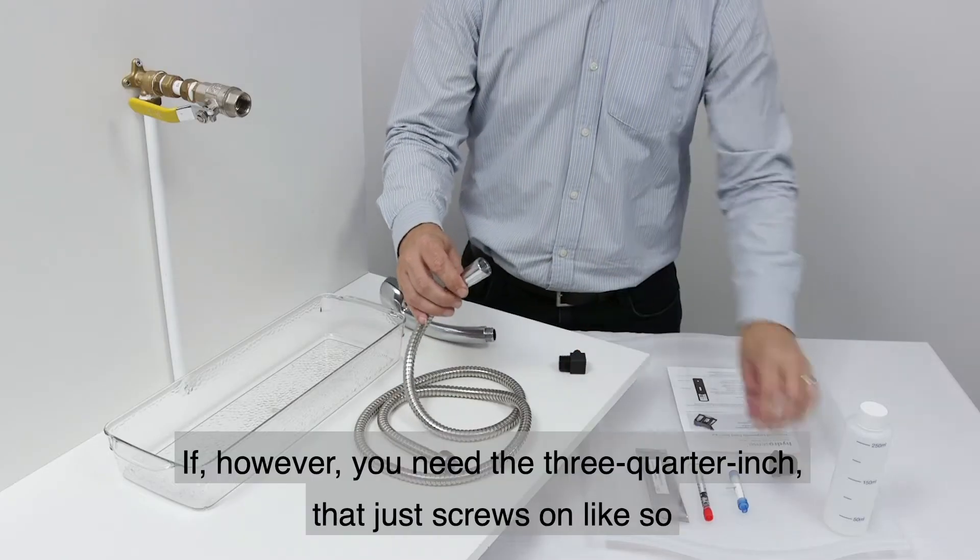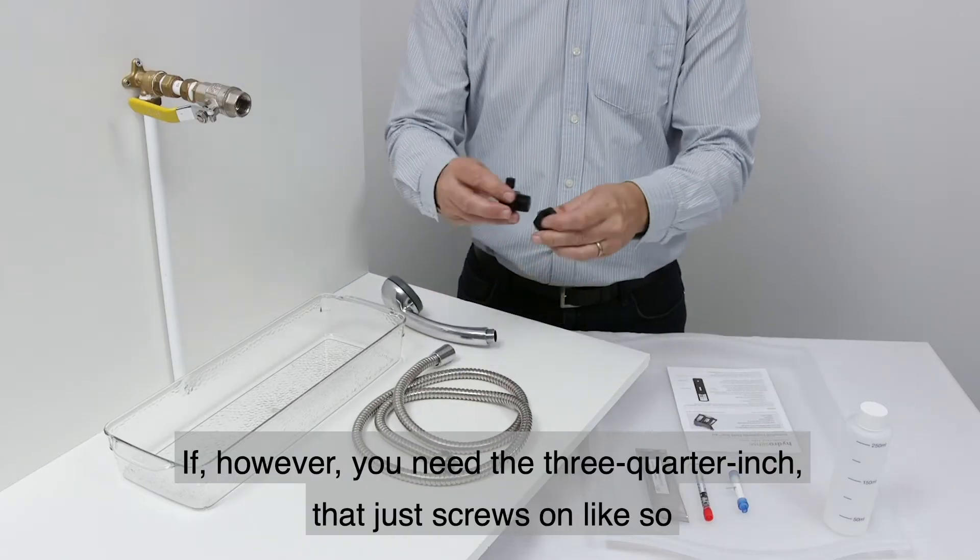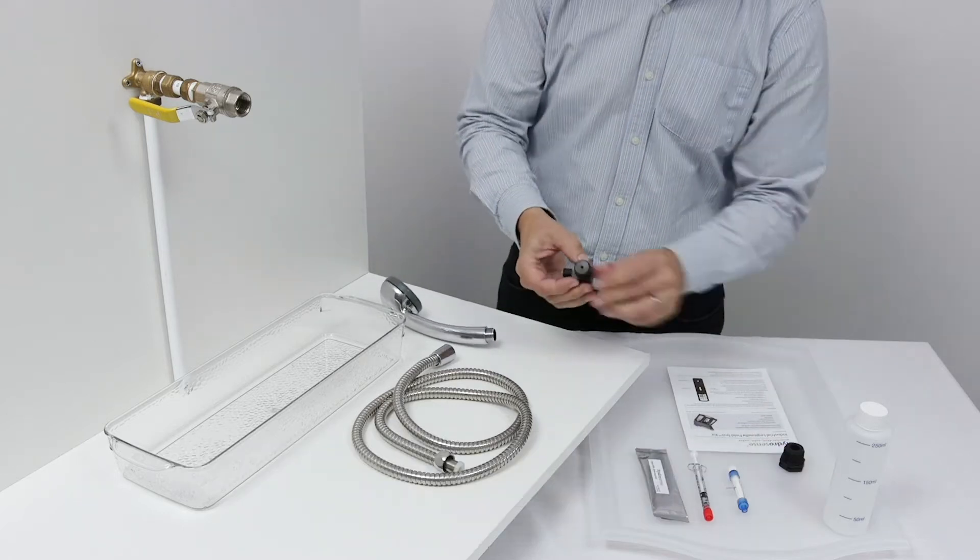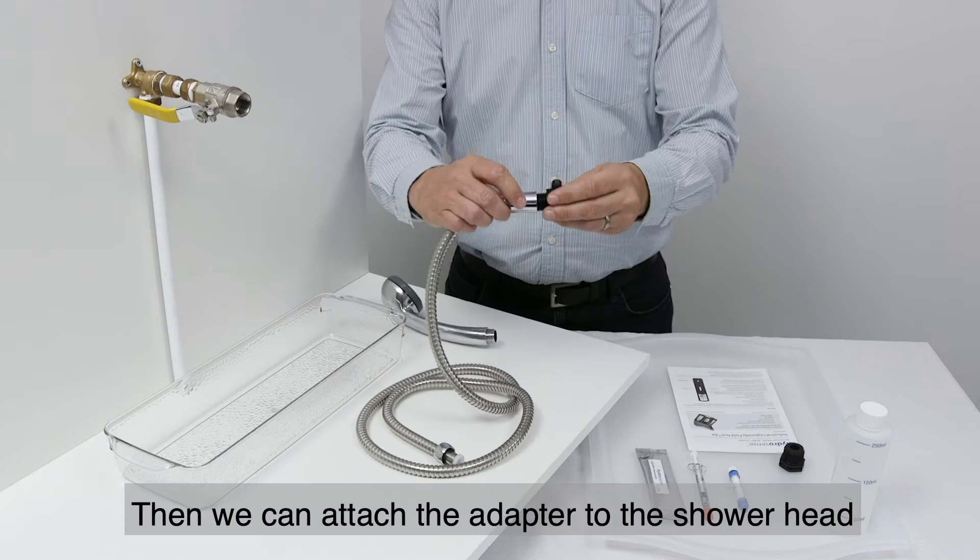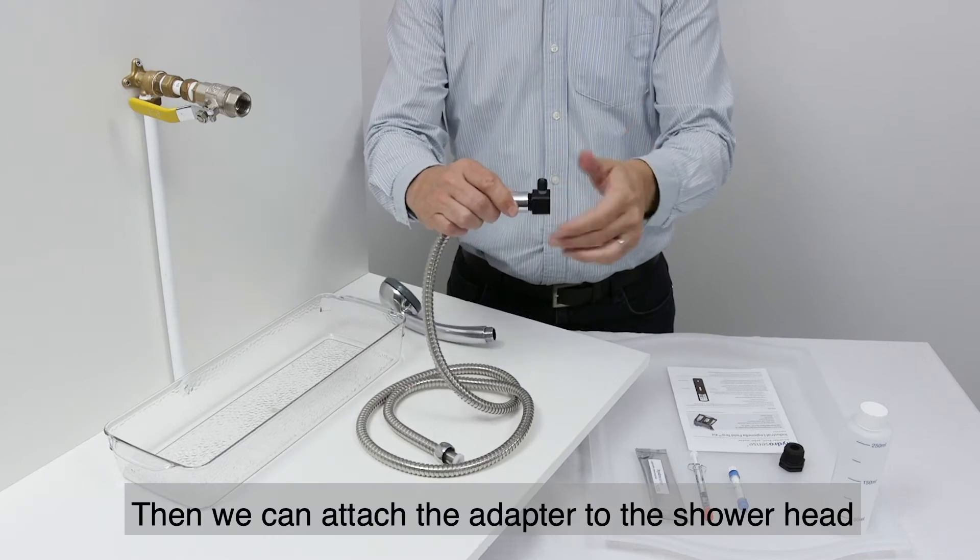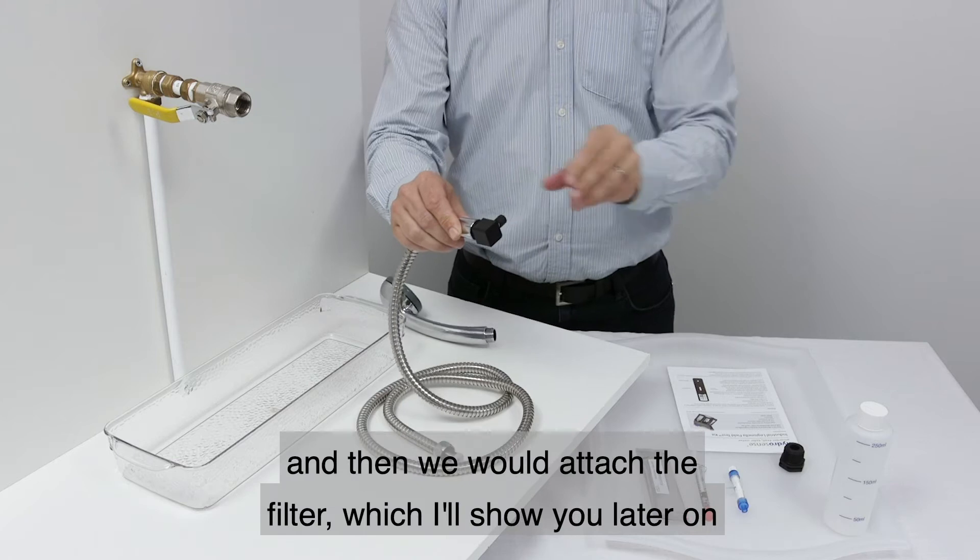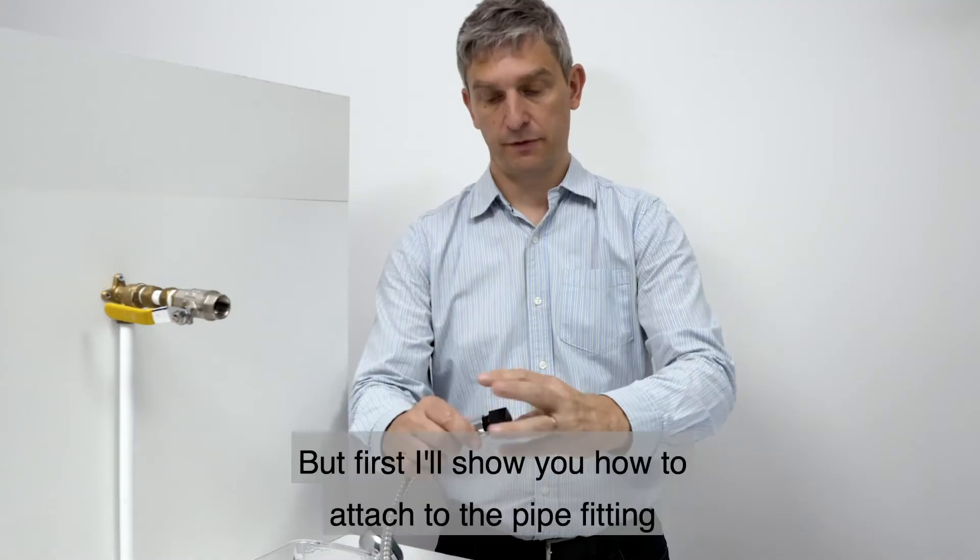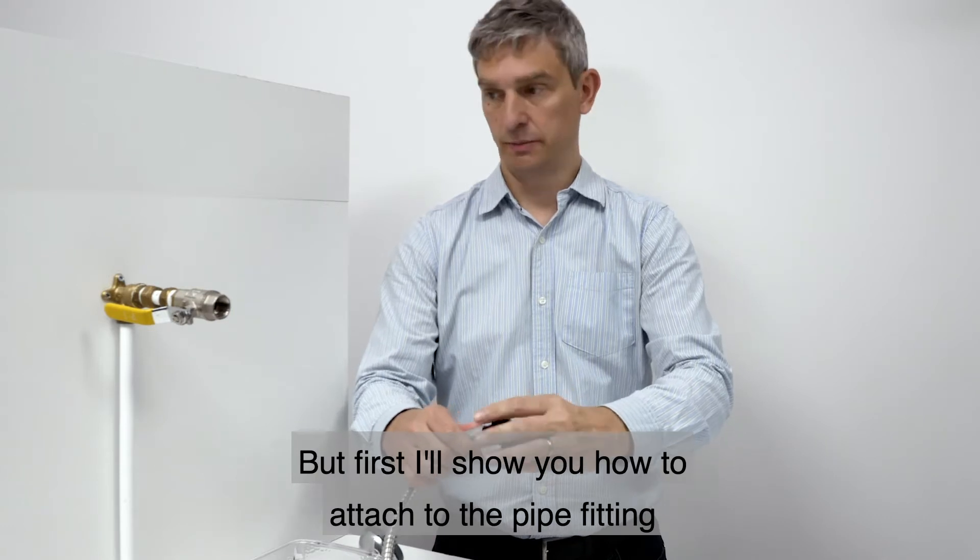If however you needed the three-quarter inch, that just screws on like so. Then we can attach the adapter to the shower head, and then we would attach the filter, which I'll show you later on. But first I'll show you how to attach to the pipe fitting.